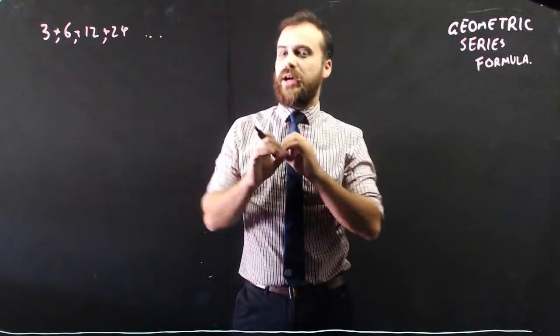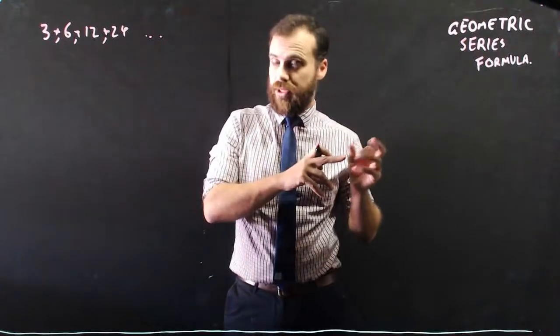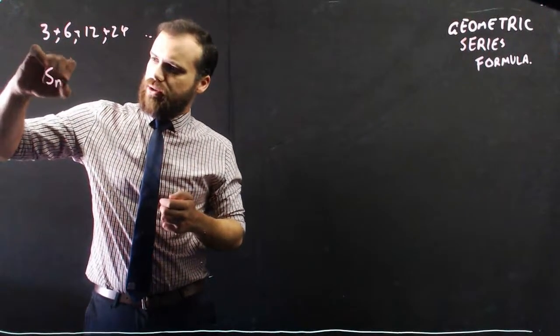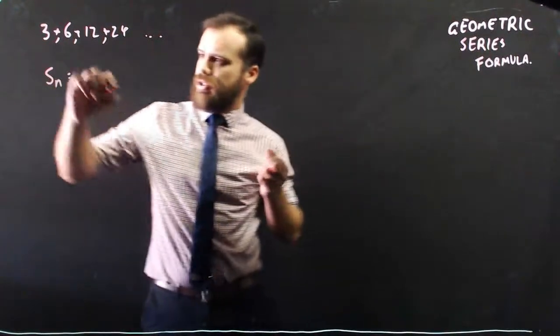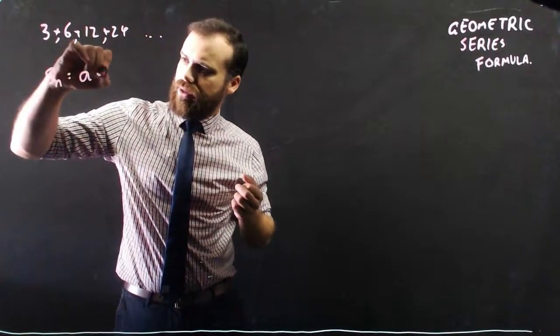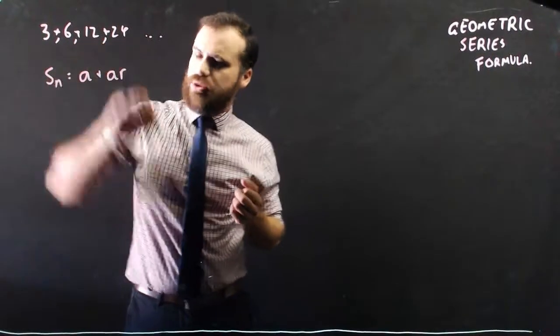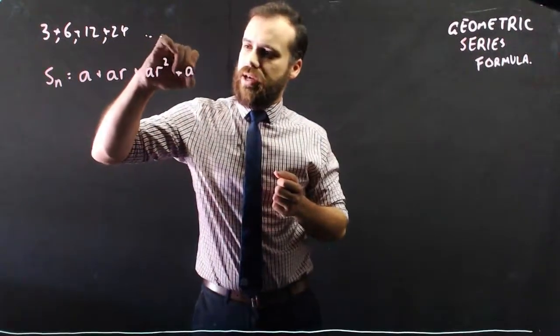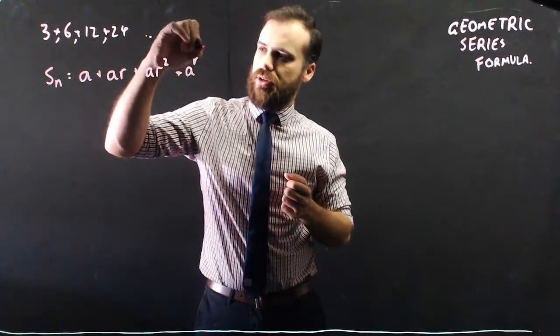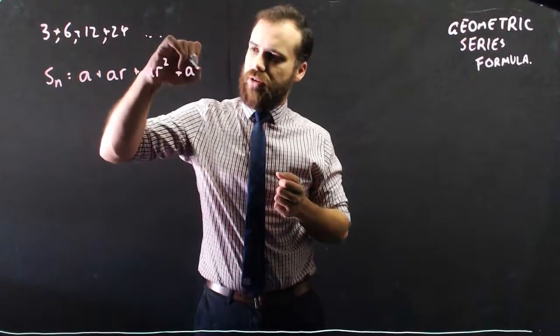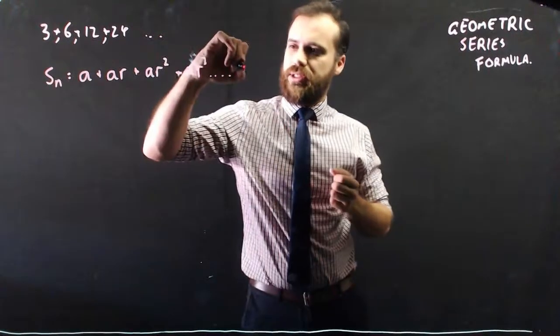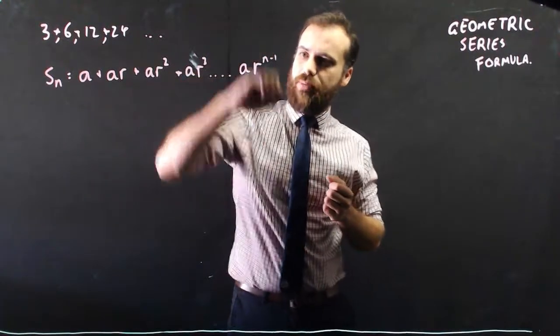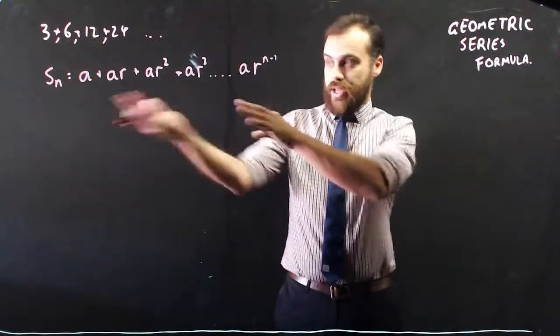Now, let's jump in and figure out how to come up with a formula. So first of all, let's say the sum of the first n terms is going to be the first term plus the first term times the common ratio, plus the next term times the common ratio squared, plus the next term times the common ratio cubed, dot dot dot, plus the next term times the common ratio to the n minus 1. Okay, so that's what it looks like.